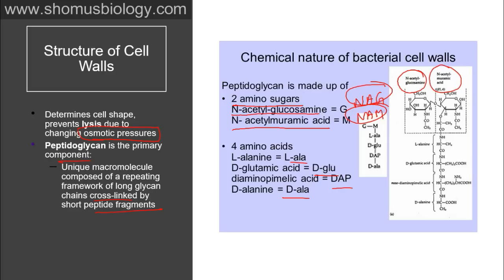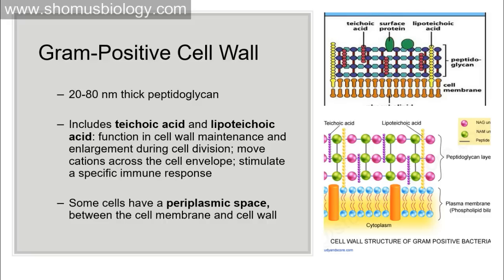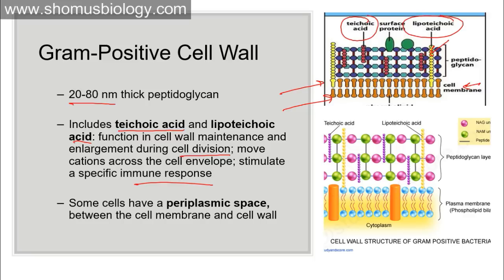In gram negative bacteria the peptidoglycan layer is very thin, but in gram positive it is very thick — approximately 20 to 80 nanometers. The gram positive cell wall includes teichoic acid and lipoteichoic acid, which function in cell wall maintenance and enlargement during cell division, move cations across the cell envelope, and stimulate specific immune responses. In a zoomed-in view, NAG and NAM are cross-linked, with teichoic acid (red), lipoteichoic acid (yellow), and surface proteins (green) visible.